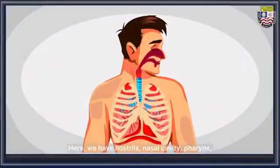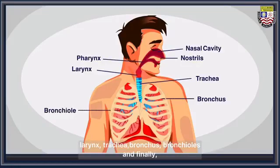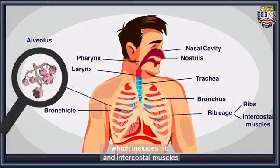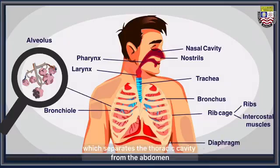Here we have nostrils, nasal cavity, pharynx, larynx, trachea, bronchus, bronchioles, and finally alveolus. The lungs are protected by the rib cage, which includes ribs and intercostal muscles, while the structure below is called the diaphragm, which separates the thoracic cavity from the abdomen.